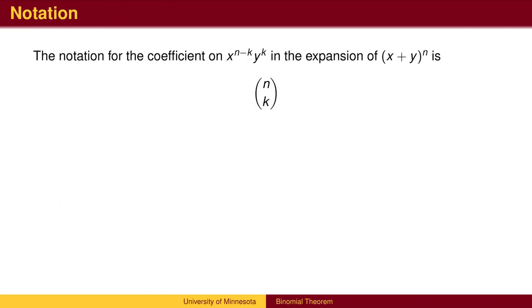The notation for the coefficients in Pascal's triangle looks like a fraction without the fraction bar. It is read n choose k, which comes from another use of Pascal's triangle for counting the number of combinations of objects, a useful building block for probability. n choose k is calculated from the following factorial formula.